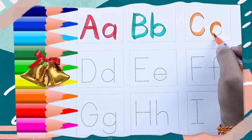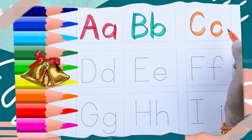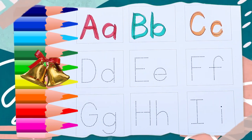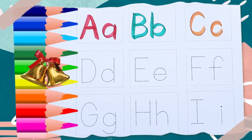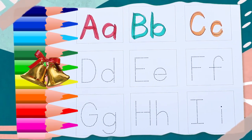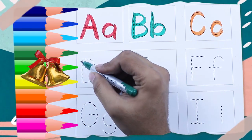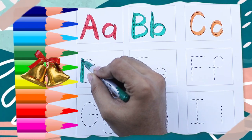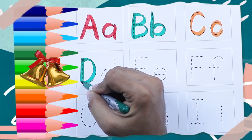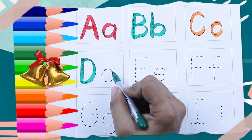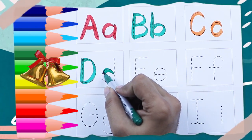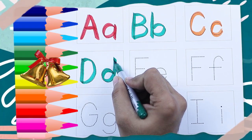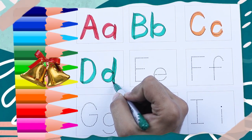Orange color capital C — C for Cat. Small c — C for Cat. Green color capital D — D for Dog. Green color small d — d for Dog.